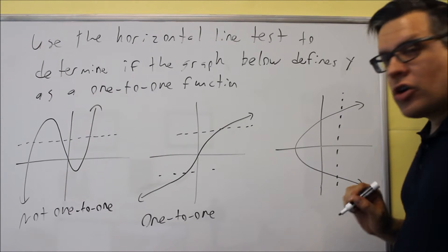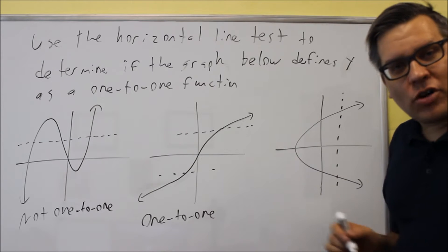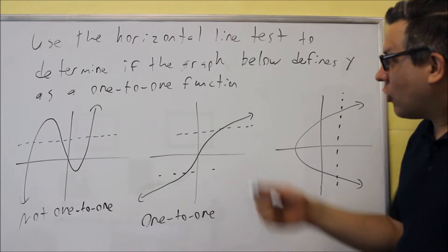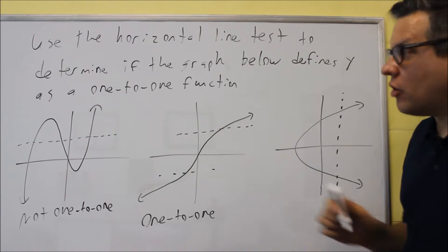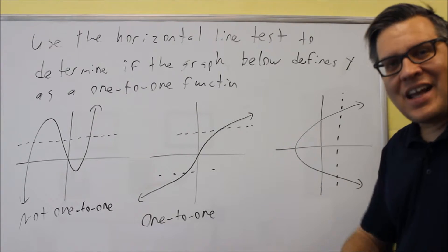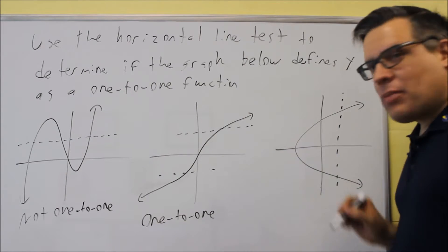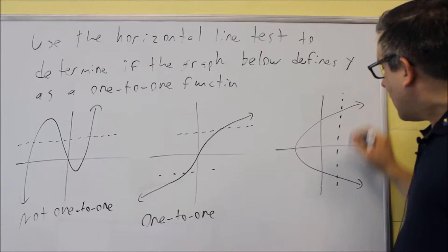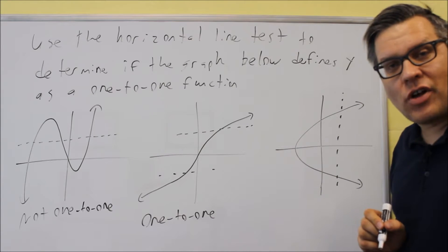Remember that we have a vertical line test to determine if it's a function or not. And I mentioned before that in order for it to be a function, or in order for it to be one-to-one, it has to first be a function. This does not pass the vertical line test because I get two different y values for a single x value.